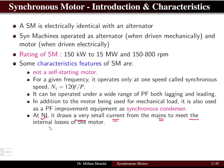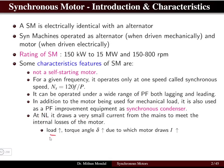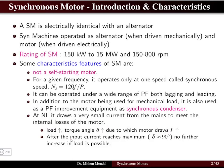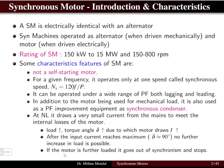At no load, the synchronous motor draws a very small current from the mains to meet the internal losses of the motor. When the load increases, the torque angle increases, due to which the motor draws more current. The increase in load is tracked by the motor with an increase in load angle. After the input current reaches the maximum — which occurs when the torque angle delta reaches 90 degrees — no further increase in load is possible.